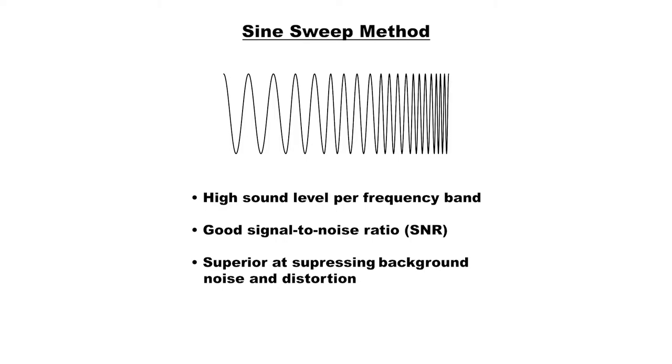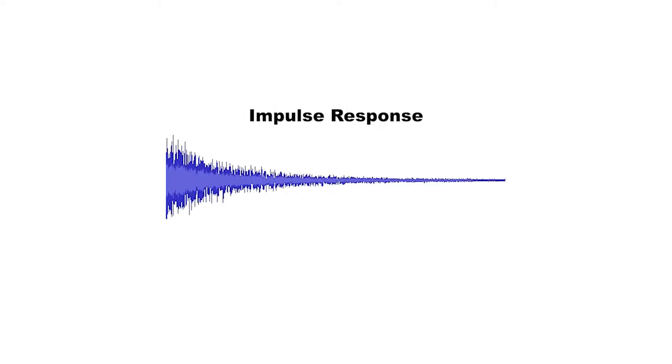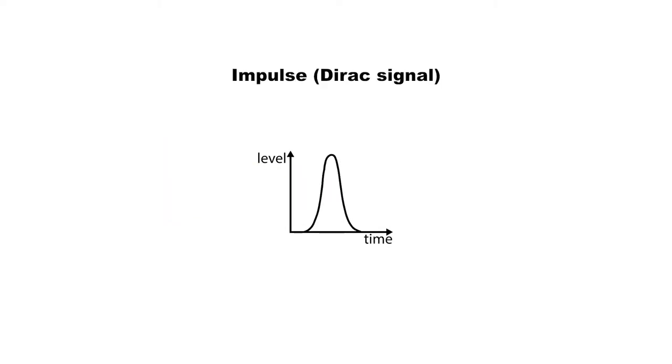To calculate most acoustic parameters you need what is called an impulse response to be measured, here meaning a recording in a room where an impulse is created. The impulse, also called direct signal, is a sound signal that, in theory, is infinitely short and infinitely loud.